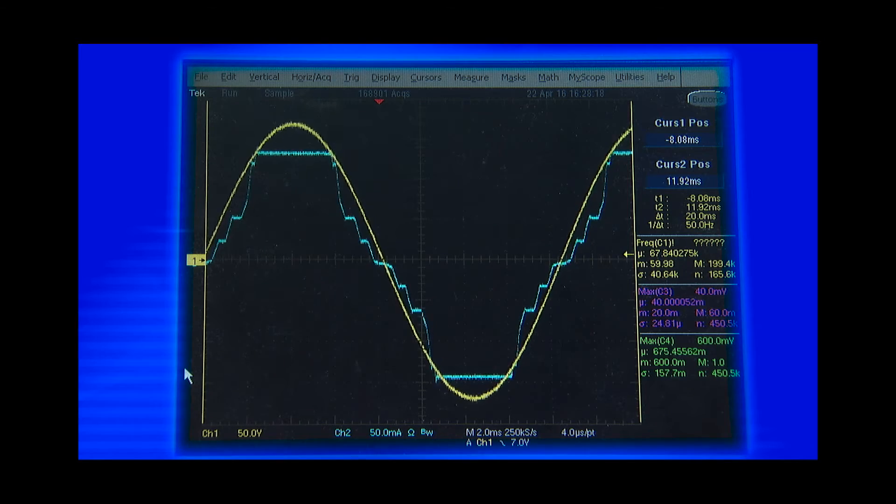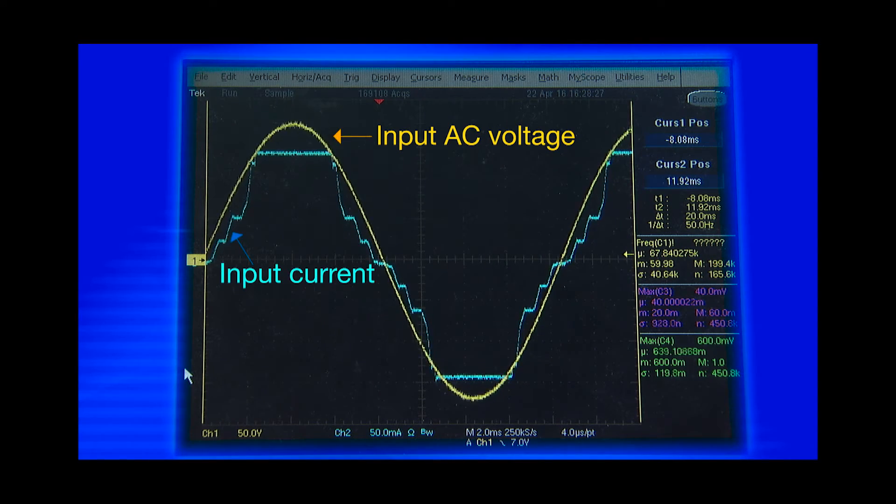The oscilloscope shows the waveform of the 120-volt AC voltage and the input current to the board. Again, channel 1 is the input voltage and channel 2 is the input current.